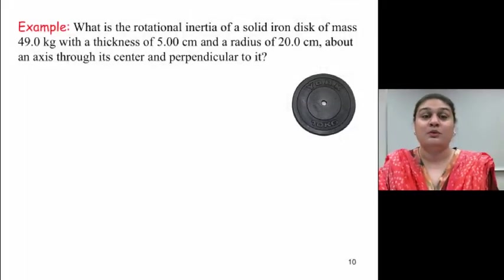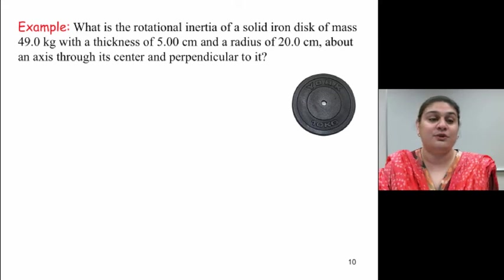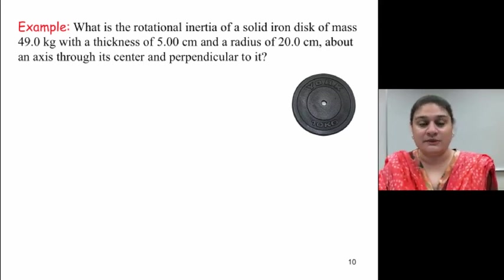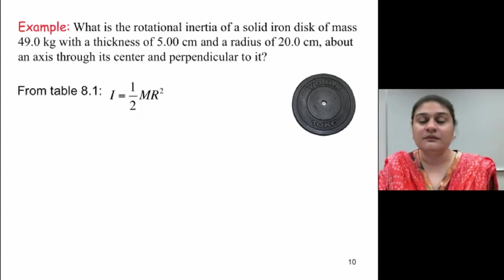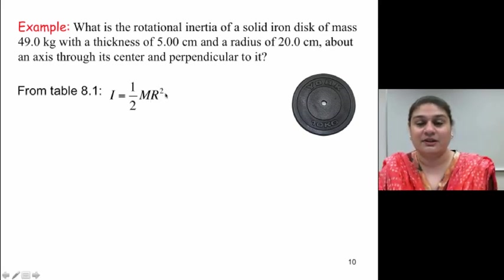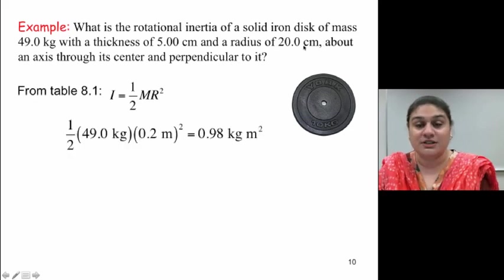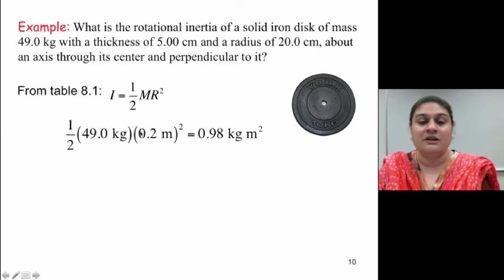Now let's look at another example. What is the rotational inertia of a solid iron disc of mass 49 kilograms with a thickness of 5 centimeters and a radius of 20 centimeters, about an axis through its center and perpendicular to it? Okay, now it's asking me for rotational inertia of a solid iron disc. So now I want you to turn to table 8.1, and from there, find the moment of inertia of the iron disc, of a solid disc. And if you look at it carefully, it is actually equals to one half m r squared. So now what you need to do is put in your mass 49 kilograms here and your radius squared here. But note, this is in centimeters, so you may have to convert it into meters. So then the answer will be one half m r squared, which gives you the answer 0.98 kilograms meter squared.